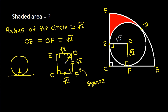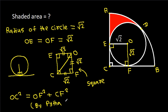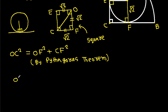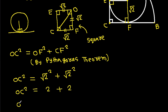If we join OC, then OC² will be equal to OF² plus CF², by the Pythagorean theorem. OC² equals (√2)² plus (√2)², which is 2 plus 2, so OC² equals 4, meaning OC equals 2.